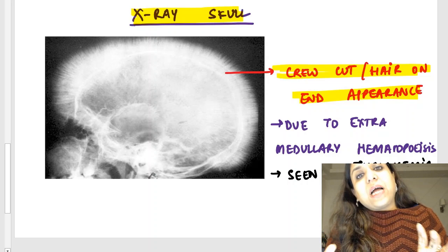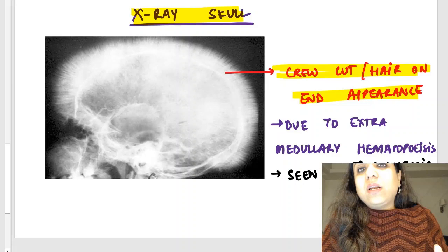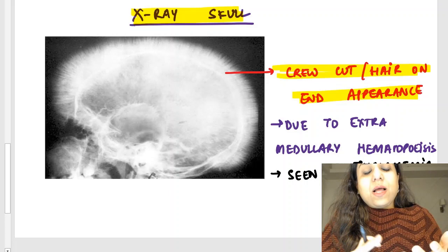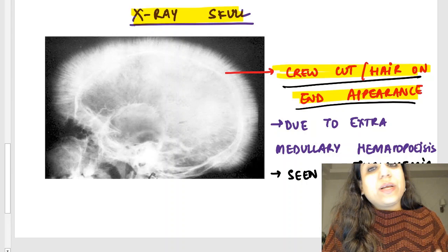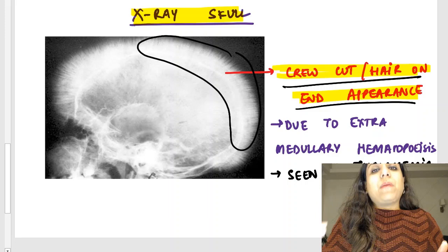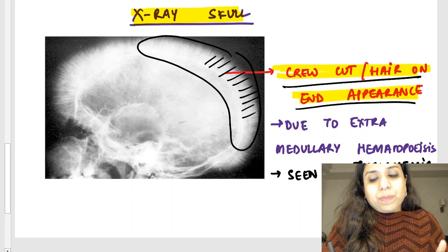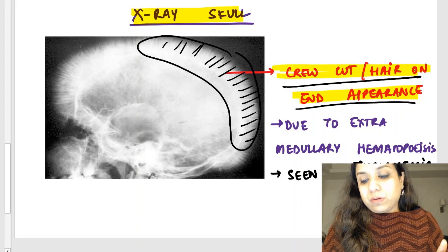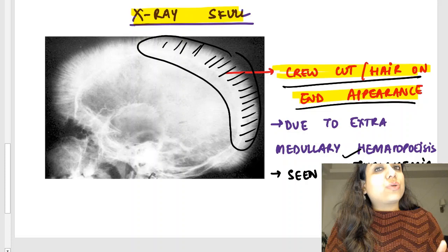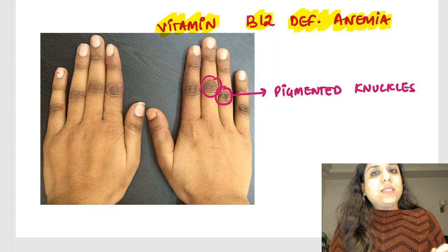Sometimes the examiner can give you an X-ray image of a skull. If the patient has anemia, it can be two things: either sickle cell anemia or thalassemia, and the appearance is called crew-cut or hair-on-end appearance. Because of extramedullary hematopoiesis occurring in the skull bones, it gives a spiky appearance. This is called crew-cut or hair-on-end appearance, seen in thalassemia and sickle cell anemia. Thalassemia is of course the most common cause.